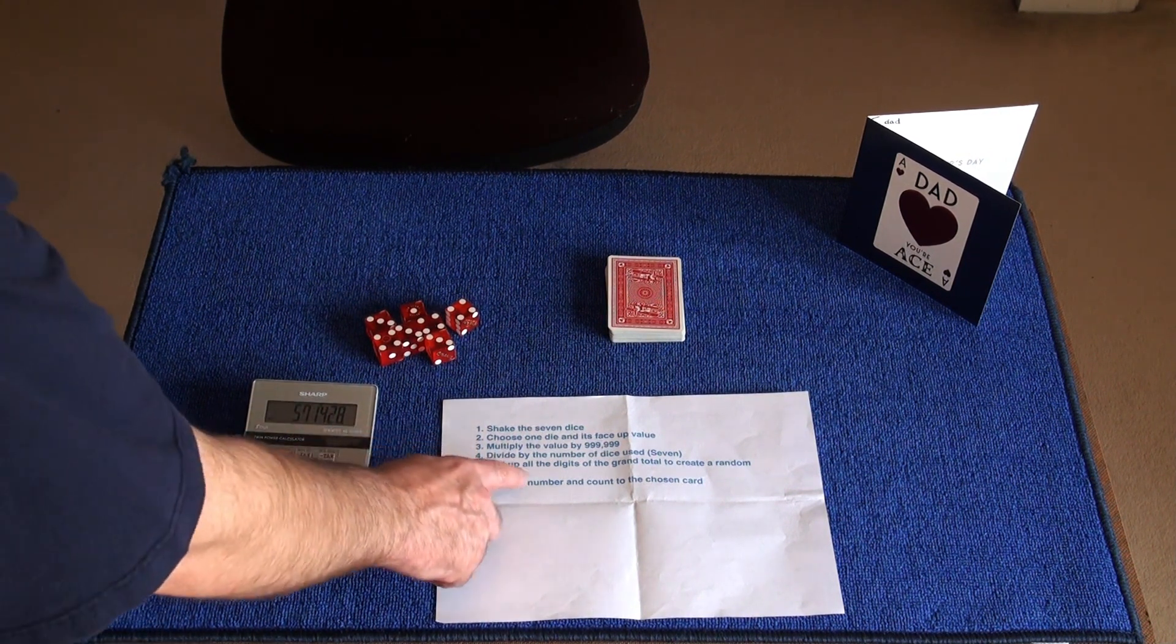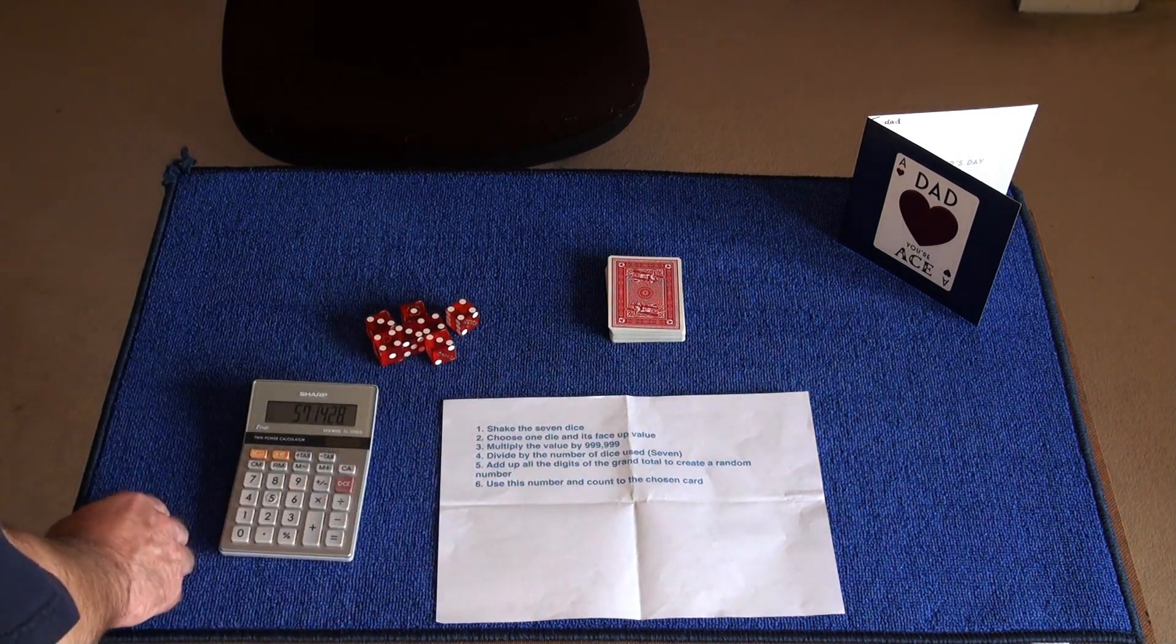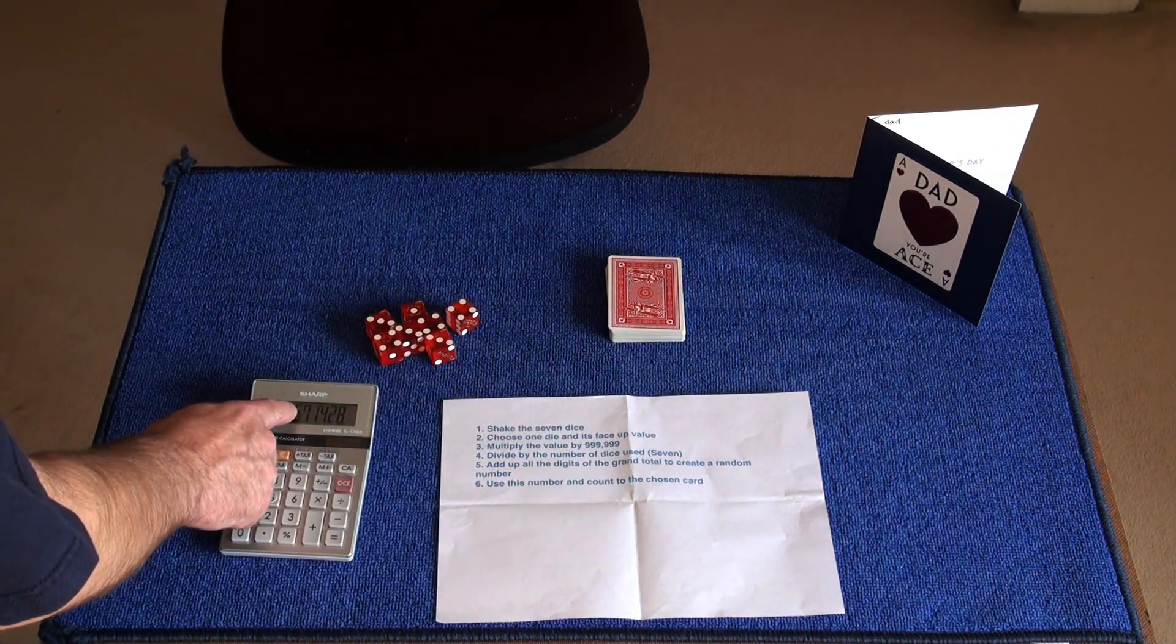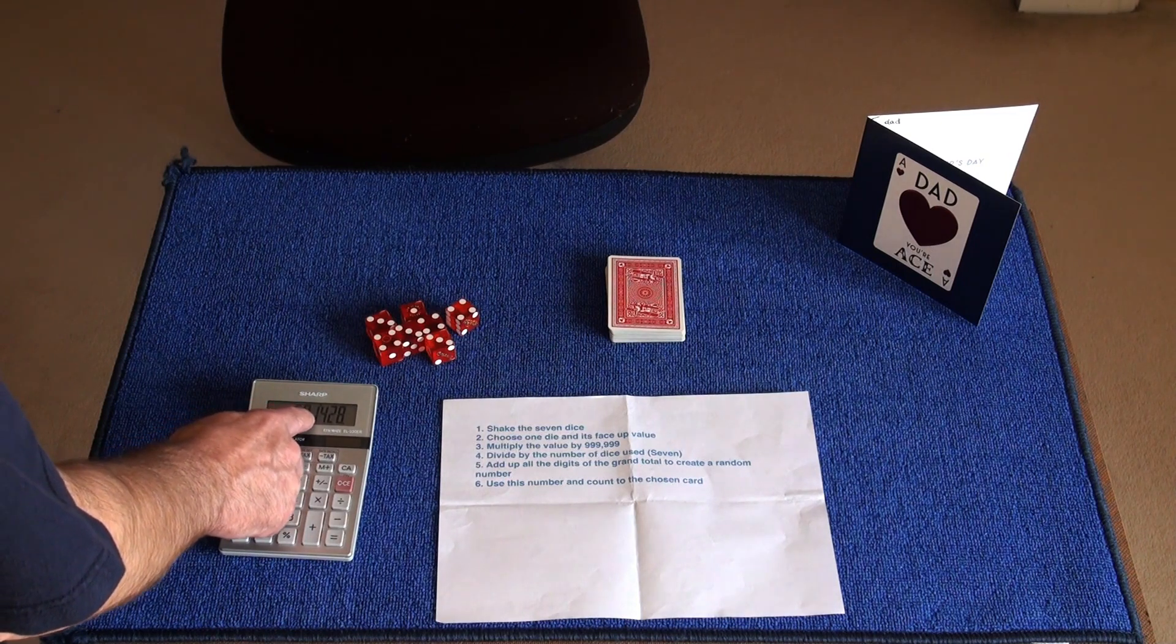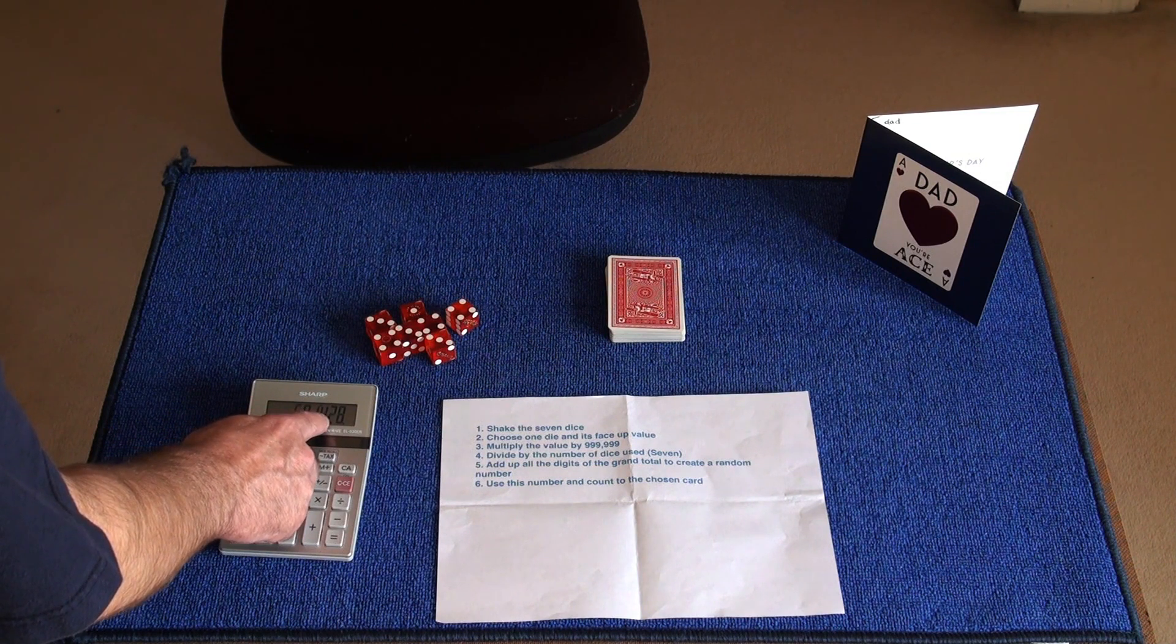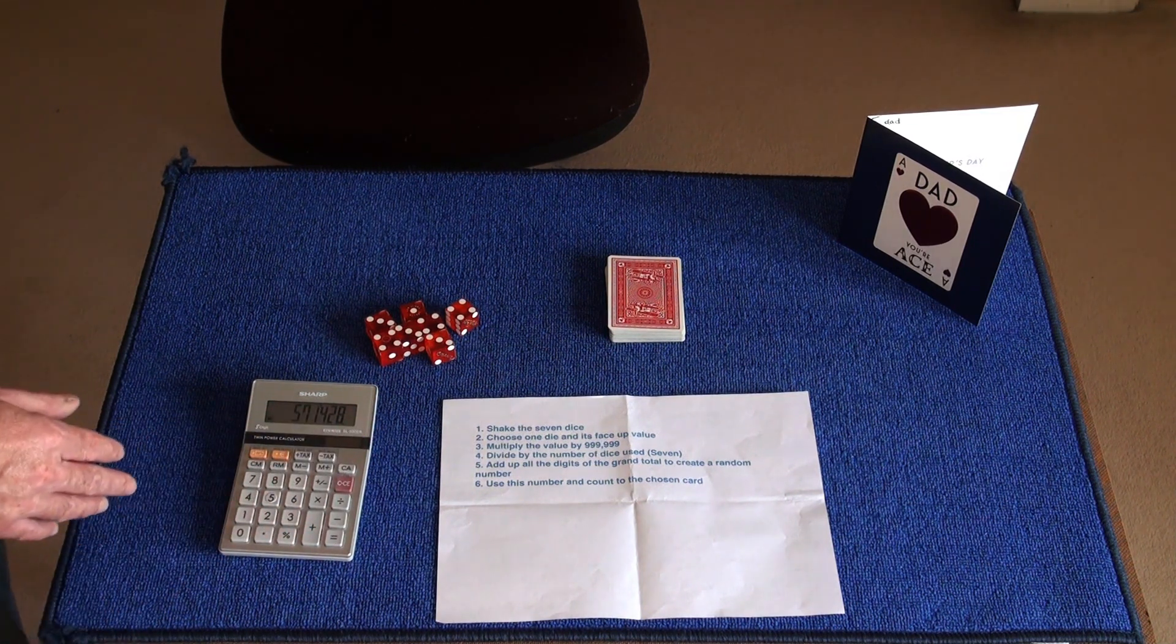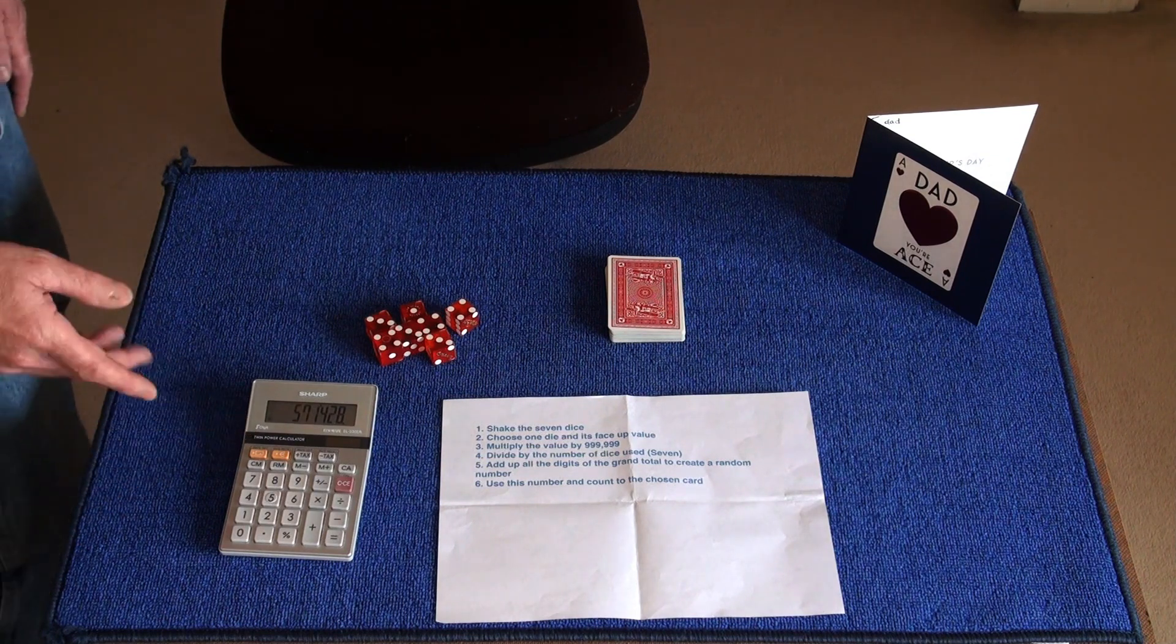Now it says add up all the digits of the grand total to create a random number. So we've got a five and a seven which is 12, and a one which is 13, a four which is 17, a two which is 19, and an eight which makes 27. So we've got a grand total of 27.